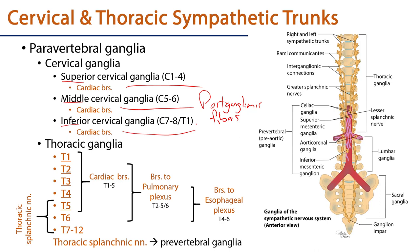These branches descend the neck into the thorax, some mingling with branches from the vagus nerves to get an early jump on plexus aggregation. For the cardiac plexus specifically, remaining fibers come from the first through fifth thoracic ganglia heading out to the cardiac plexus. T2 through T5, and sometimes T6, provide cardiac branches to the pulmonary plexus as well, and an even smaller subset — T4 through T6 — head out to the esophageal plexus.